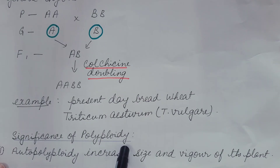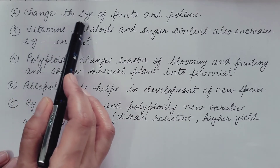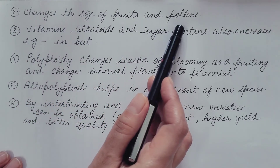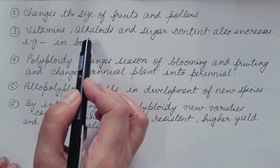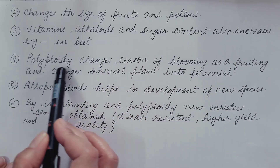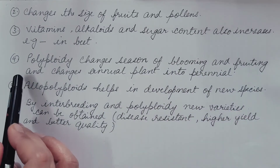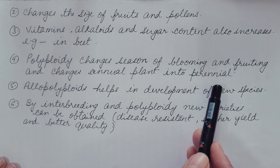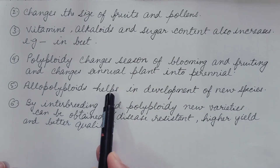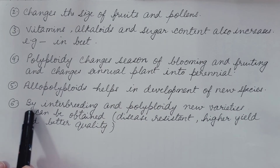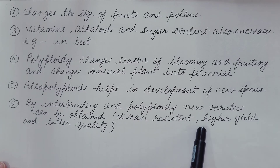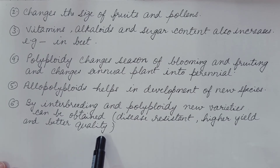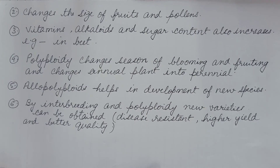The significance of polyploidy: autopolyploidy increases the size and vigor of plants and changes the size of fruits and pollen, which are normally bigger. Vitamins, alkaloids, and sugar content also increase, as seen in autopolyploid beet. Polyploidy changes the season of blooming and fruiting and changes annual plants into perennial plants. Allopolyploidy helps in development of new species, and through polyploidy new varieties with disease resistance, higher yield, and better quality can be obtained, leading to an agricultural revolution.